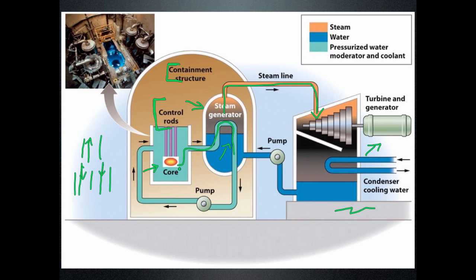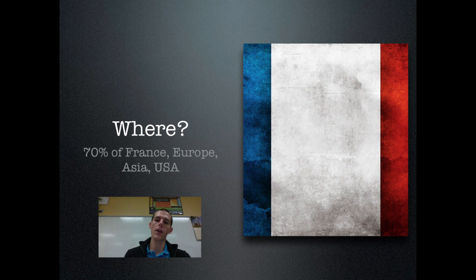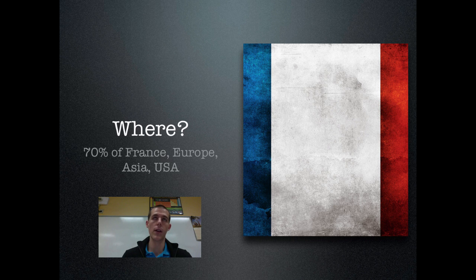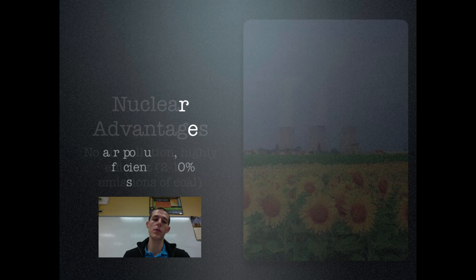This core is also surrounded by water, which absorbs some of the nuclear energy being released. As far as where nuclear energy is produced, the biggest producer of nuclear energy in the world is France — they get 70% of their electricity from it. A lot of Europe has been very successful at producing nuclear energy. China and Japan use it as well. The USA gets about 20% of our electricity from nuclear energy. So Europe, Asia, France, and the USA are the places where nuclear energy is more commonly used.